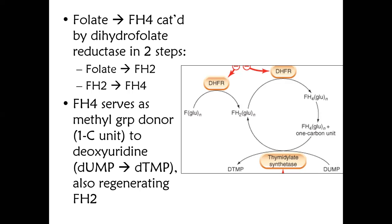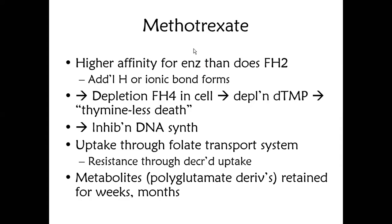dTMP is required for DNA synthesis — specifically for thymine, one of the DNA bases (T). All the folate pathway reactions happen just for this. If dTMP is formed, DNA can form; if dTMP itself is not forming, then DNA will not form. This is a two-step process: folate is converted to dihydrofolate, then to tetrahydrofolate, and this FH4 serves as the methyl group donor to convert dUMP to dTMP via thymidylate synthase.